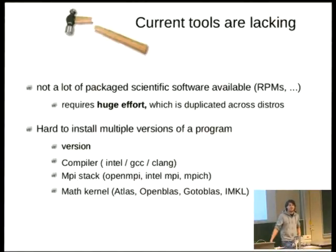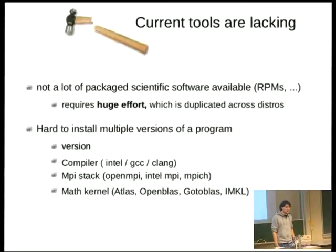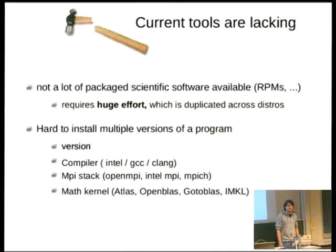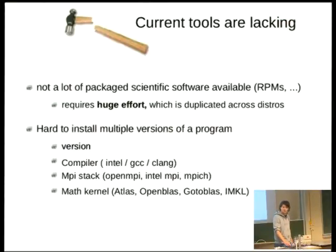We also compile packages with different compilers — Intel compiler, GCC, and others — because sometimes different compilers give different results, or we want to test which one generates the most performant code. For example, we'd build everything with Intel, but mostly GCC gives the best performance. Researchers also want to use the same build as they have on their laptop, where they compiled with GCC. So we want to make both available, allowing you to switch toolchain stacks.